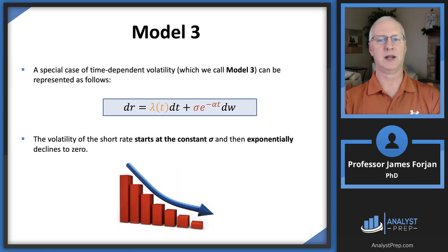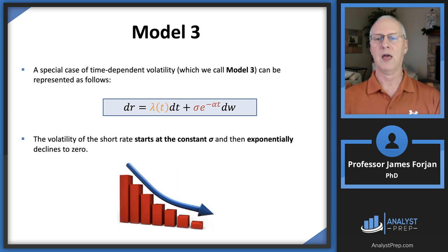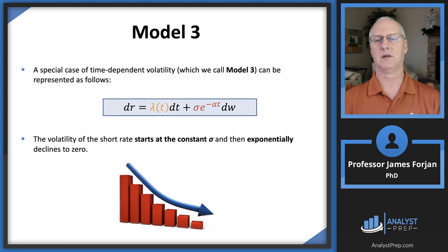Think of that e to the minus alpha t in terms of discounting the volatility. Say it starts at 10% and you want it to exponentially decline to zero rather than linearly — not 10%, nine, eight, seven down to zero, but an exponential decline. We pick a constant alpha that gives us some slope that makes sense fundamentally, economically, or within our pricing model.